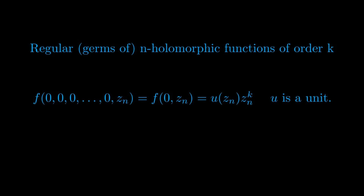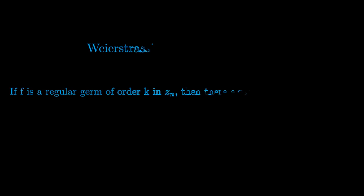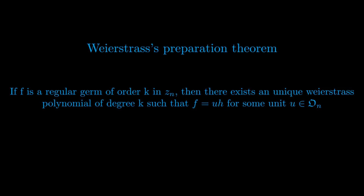This definition was introduced to avoid variable clutter, as we will work with functions having this property often during the proof. The definition of regularity also makes sense for germs of holomorphic functions, since it is fundamentally a local property. We are now ready to state the Weierstrass Preparation Theorem: if f is a regular germ of order k in z_n, then there exists a unique Weierstrass polynomial h of degree k such that f = u·h for some unit u.